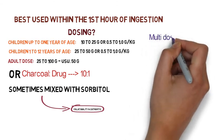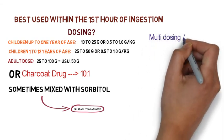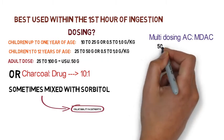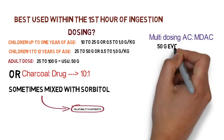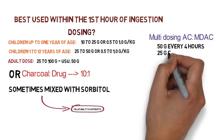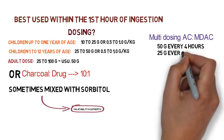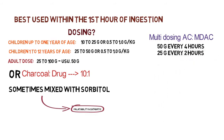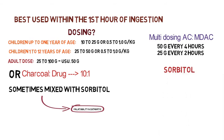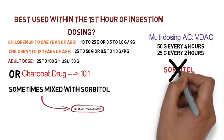Another regimen is the multi-dose activated charcoal, or MDAC. We use 50 grams every 4 hours or 25 grams every 2 hours. It's important not to use sorbitol with the multi-dose activated charcoal regimen.